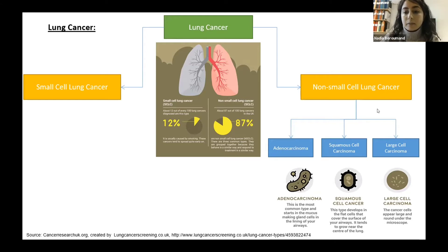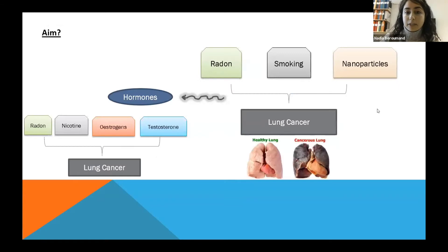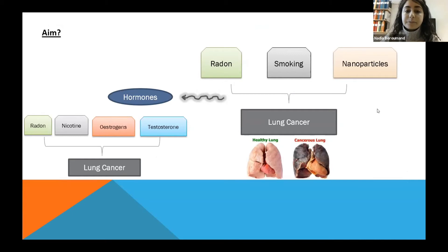And large cell carcinoma, which can be found anywhere in the lung, and they are the ones that have fast growth and can spread really easily. The aim of this project, as I said before, is to investigate the interaction between radon, smoking, and nanoparticles in inducing lung cancer, both alone and in combination. And in the meanwhile, we are also assessing the modulatory effects of hormones.